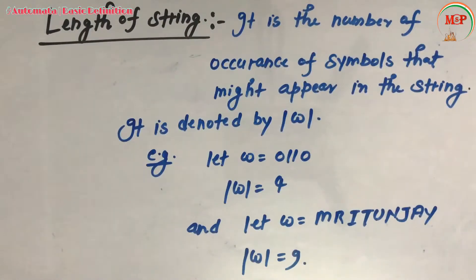The next definition is length of string. It is the number of occurrences of symbols that might appear in the string and it is represented by |w|. If w = 0110, then |w| or the length of string is 4 because there are 4 alphabets present in the given w. And if we take w = mritunja, then its length of string is 9 because a total of 9 alphabets are present in given w.